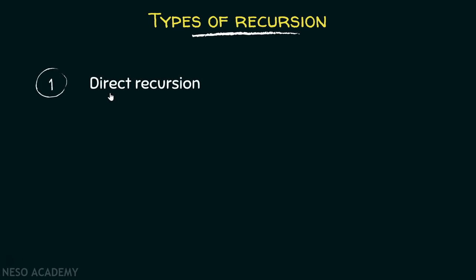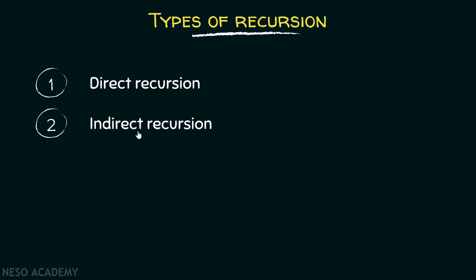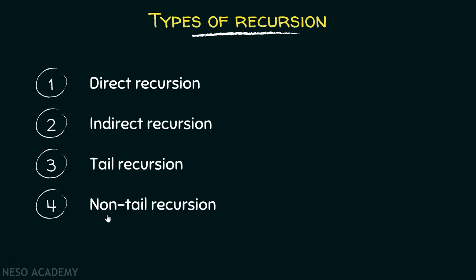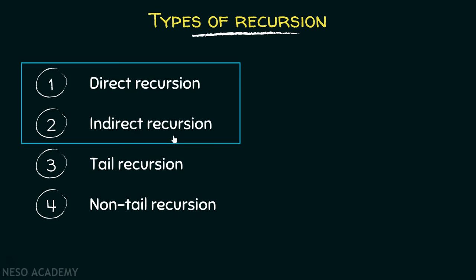The first one is direct recursion. The second one is indirect recursion. The third one is tail recursion. And the fourth one is non-tailed recursion. In this particular presentation, we will discuss the first two types, that is direct recursion and indirect recursion. Now, let's try to understand what is direct recursion.